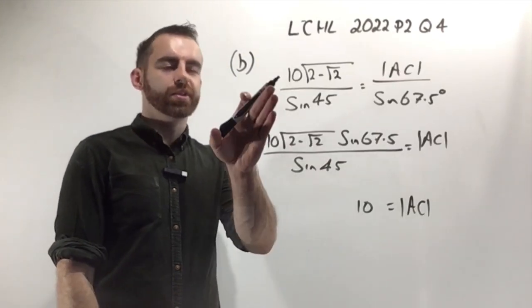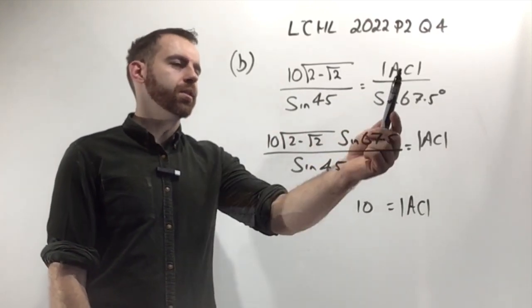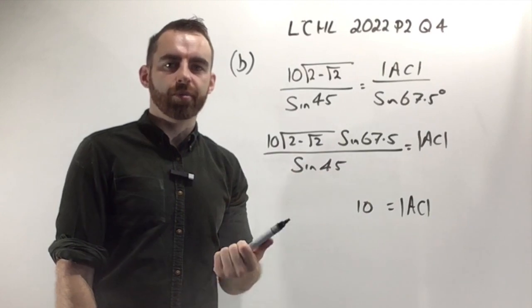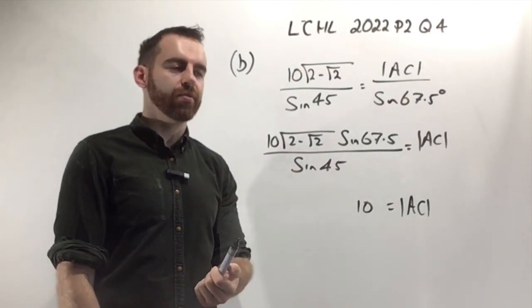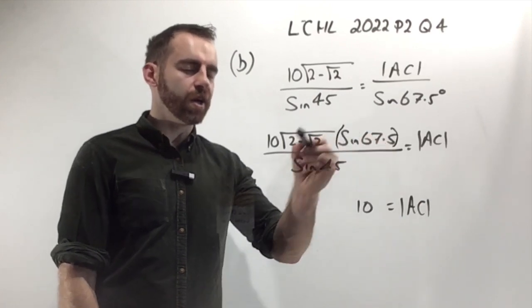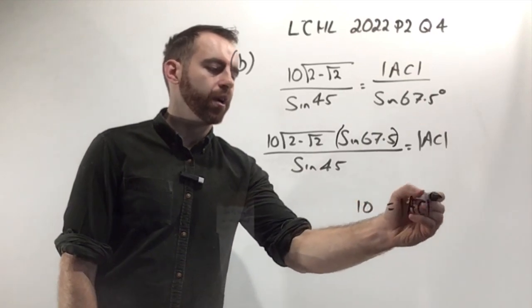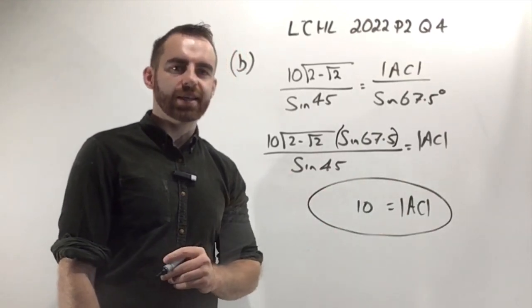We've subbed into our sine rule. We now have one equation and one unknown. We're trying to isolate AC. To get AC on its own, multiply both sides by sine 67.5. We get AC on its own, and sine 67.5 is now on the top of the fraction on the left. Just plug all that into your calculator, and your answer works out as the distance AC is 10.